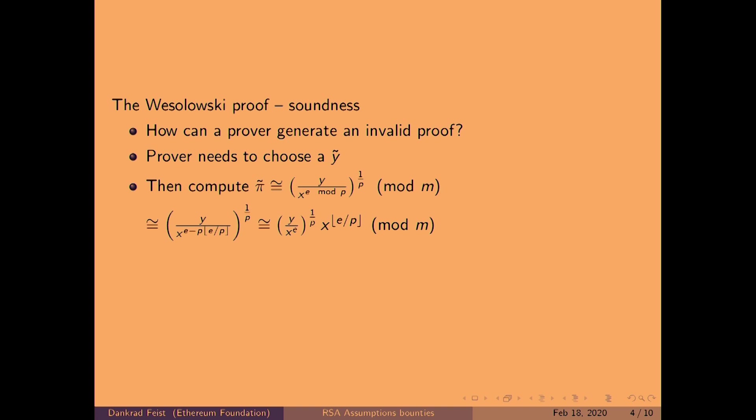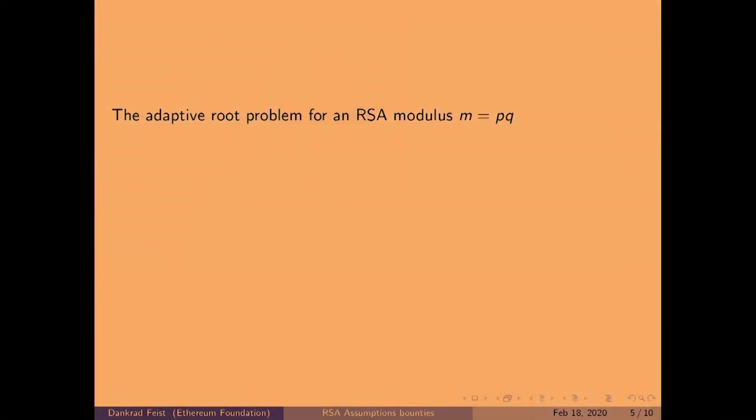Basically, the prover can choose any element, and if they are able to take a p-th root for some p that the verifier sends them afterwards, then they would be able to generate a proof for this ỹ, despite that not being the correct answer. We call this the adaptive root problem. Let's rewrite what the adaptive root problem actually is.